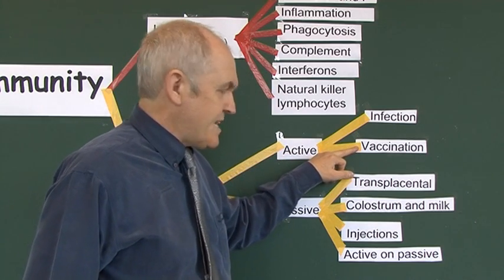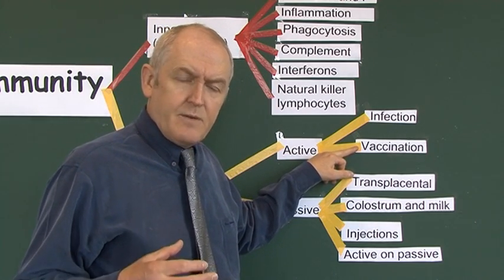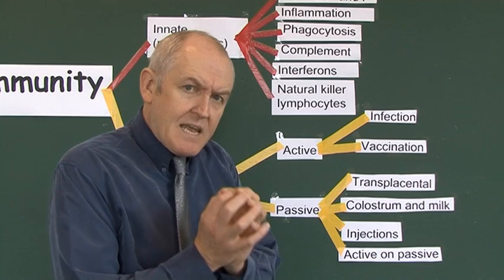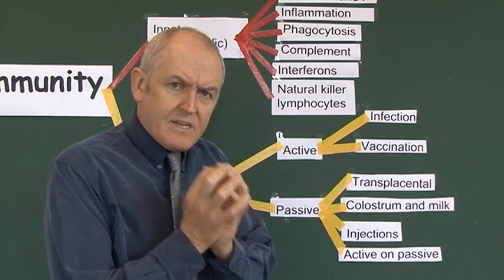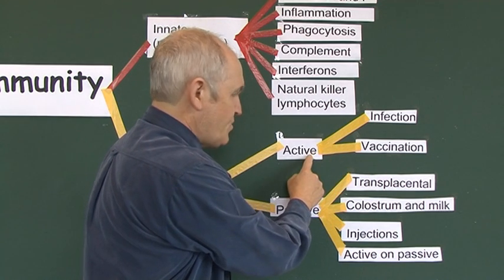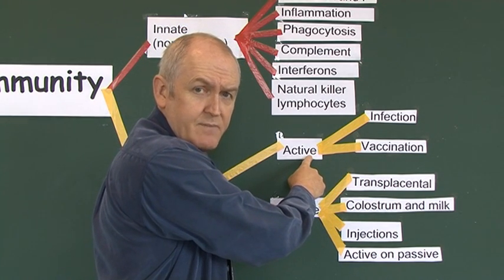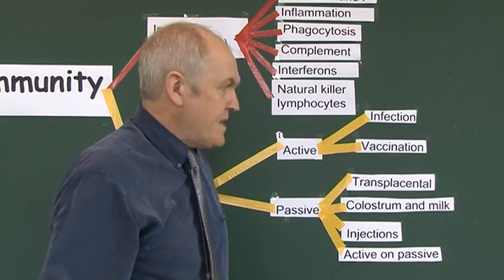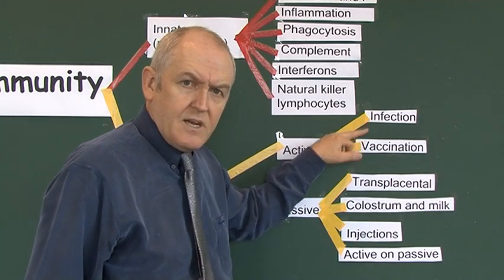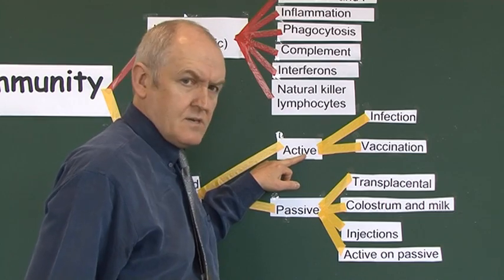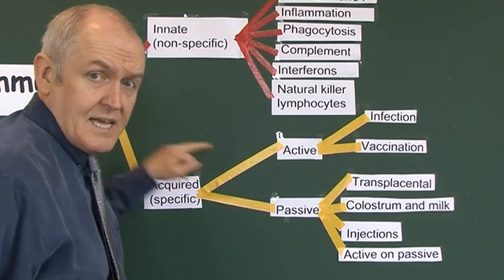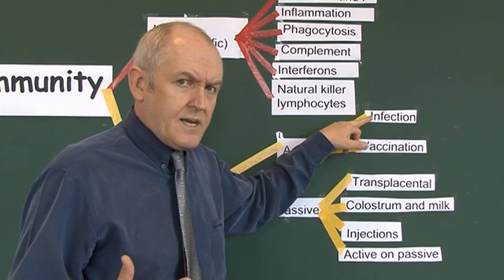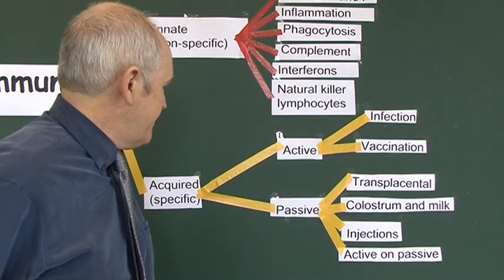Vaccination achieves the same thing. Typically you're given inactivated or dead organisms, but they are chemically the same as the living organisms. Because they're chemically the same, the immune system recognises them as foreign and makes antibodies to them. Then if you're subsequently exposed to the actual organism, you've already got the actively produced specific immune antibodies, and hopefully you won't get sick at all, or nowhere near as sick as you would have been had you not been vaccinated.